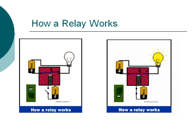How a relay works: we have two pictures — one showing the off position and another showing the on position. In the off position, the battery terminal is open and the relay terminal is open. In the on position, the battery terminal is closed and the lamp is lit (blue).